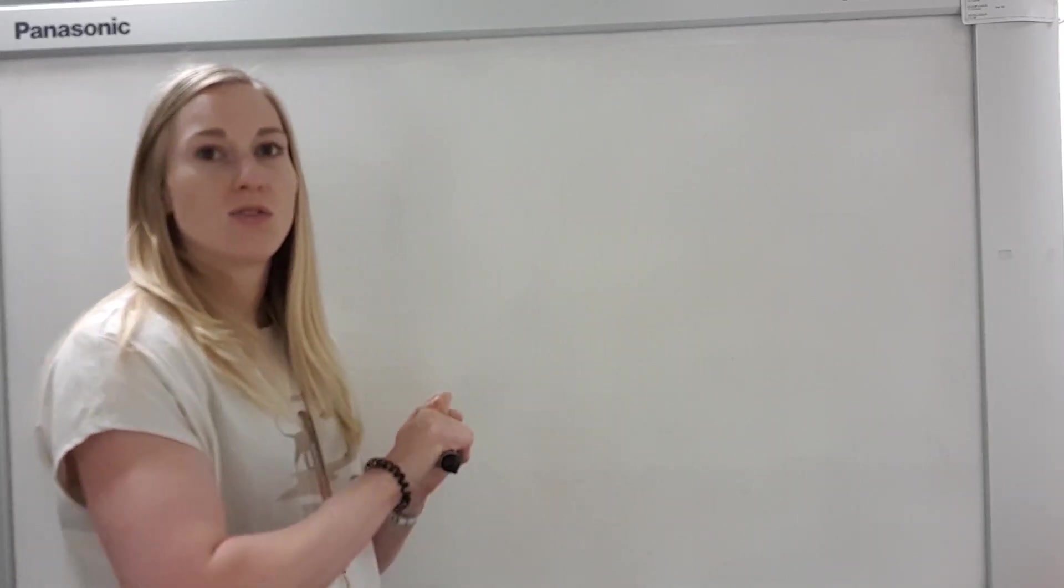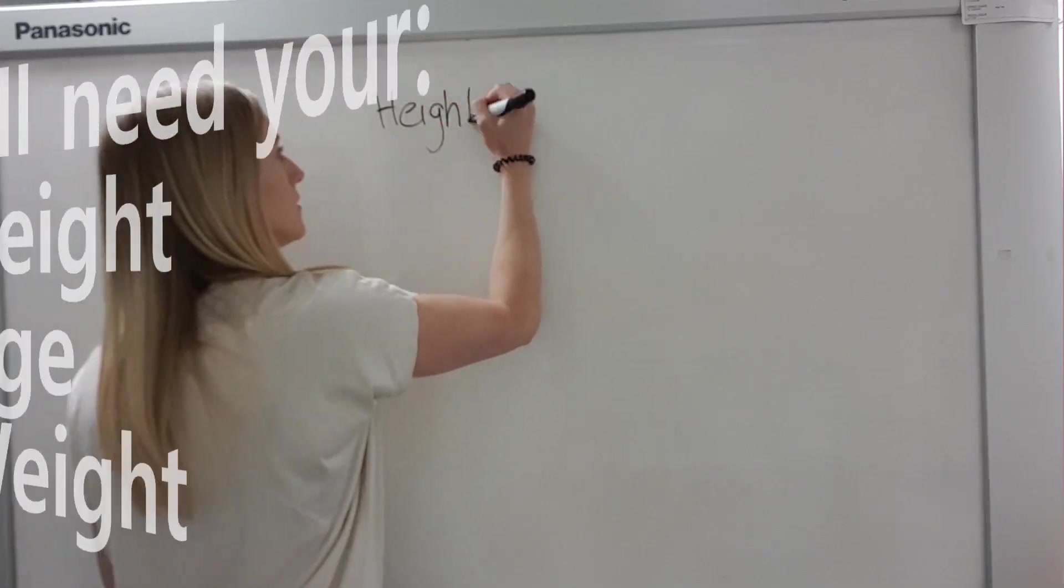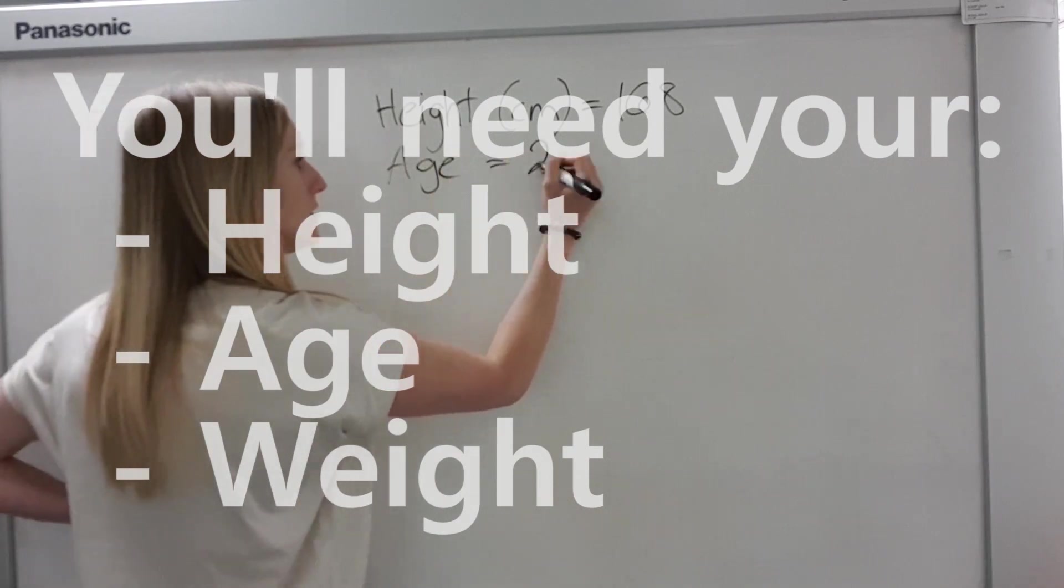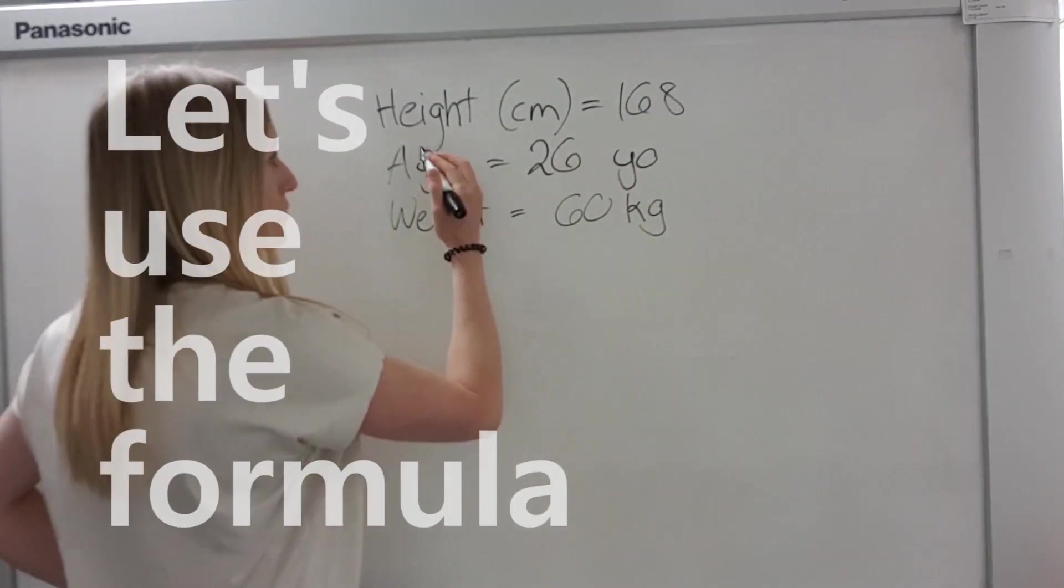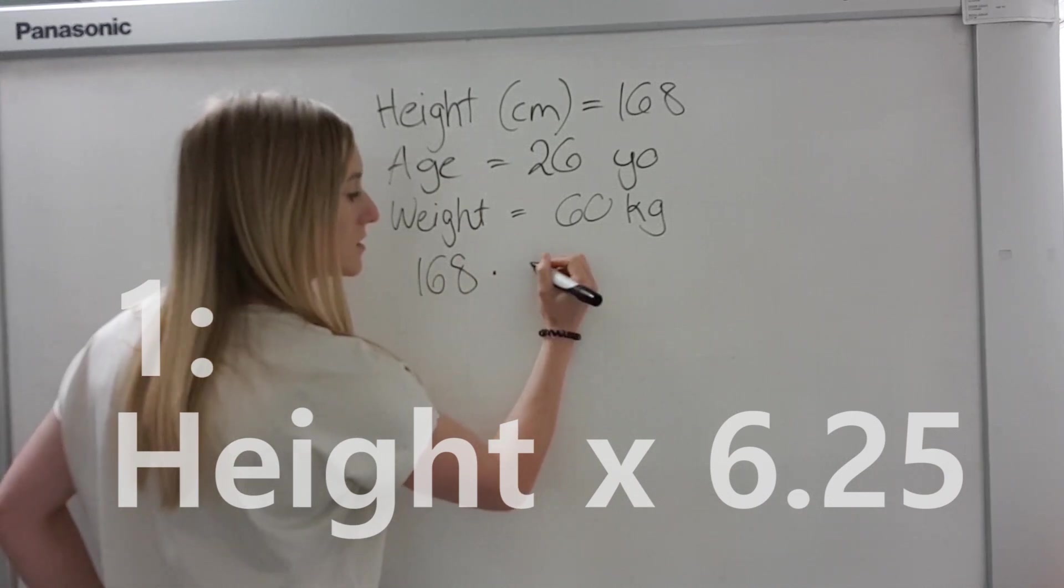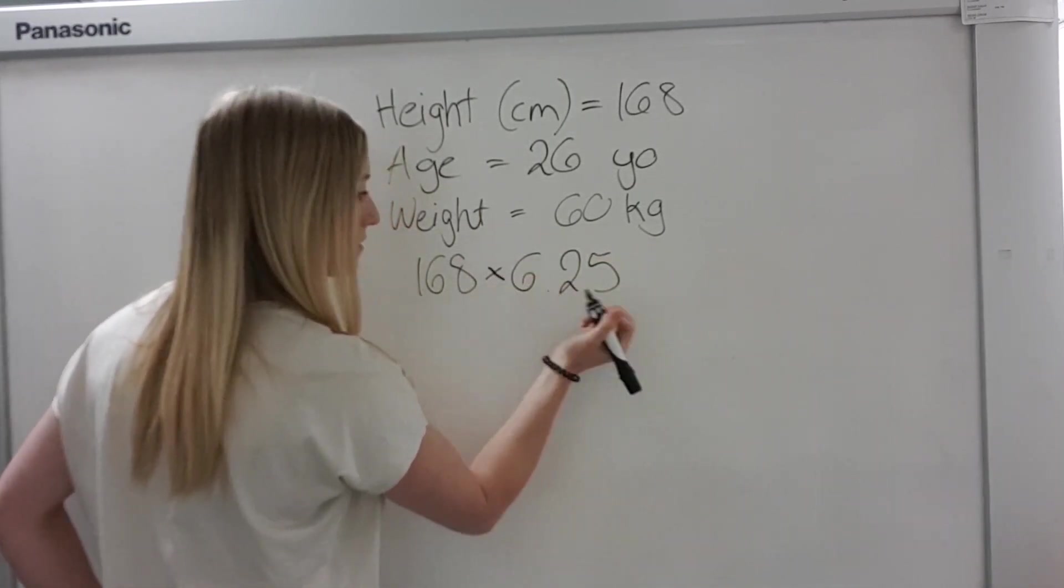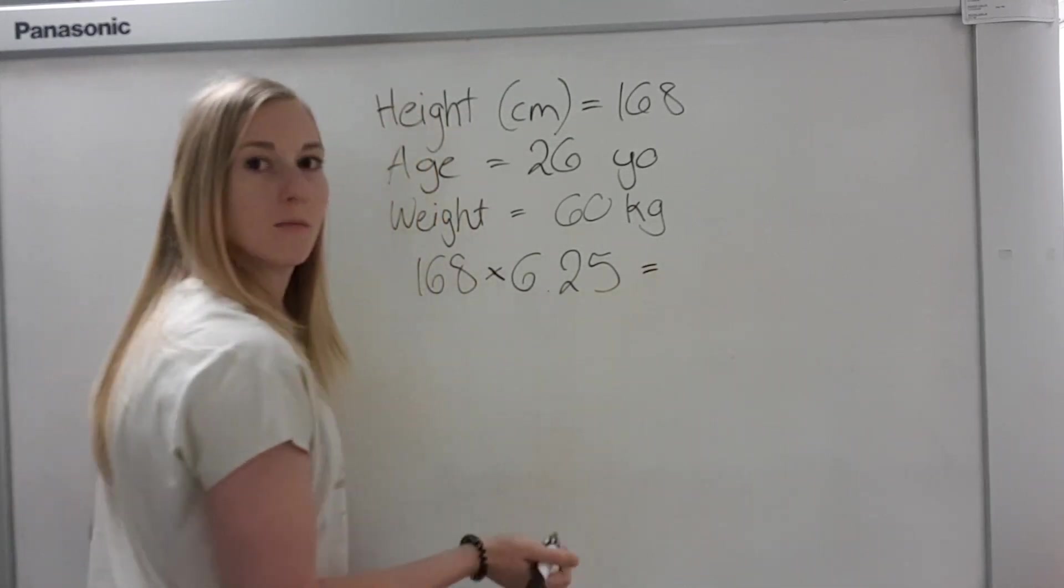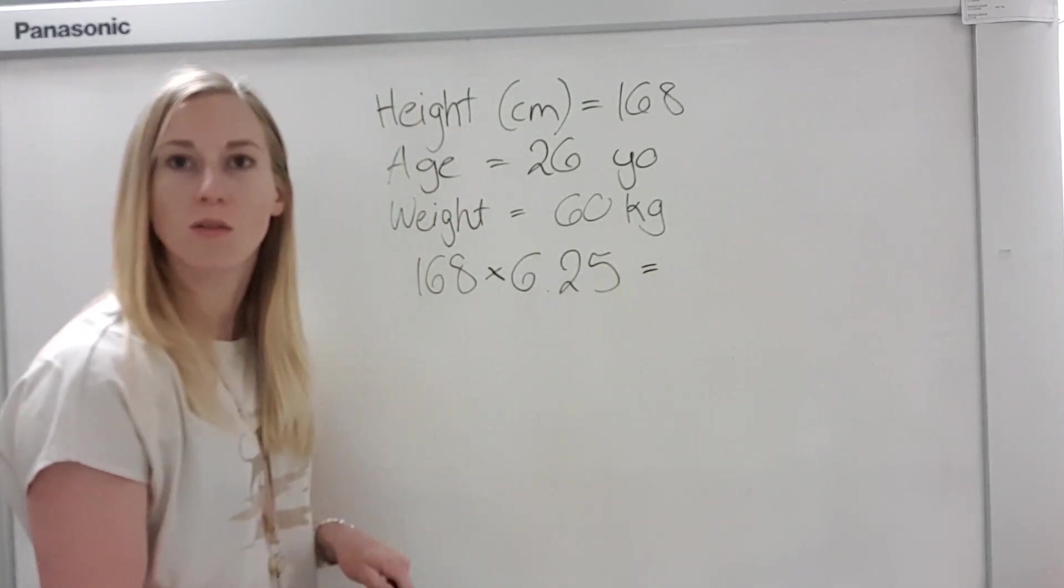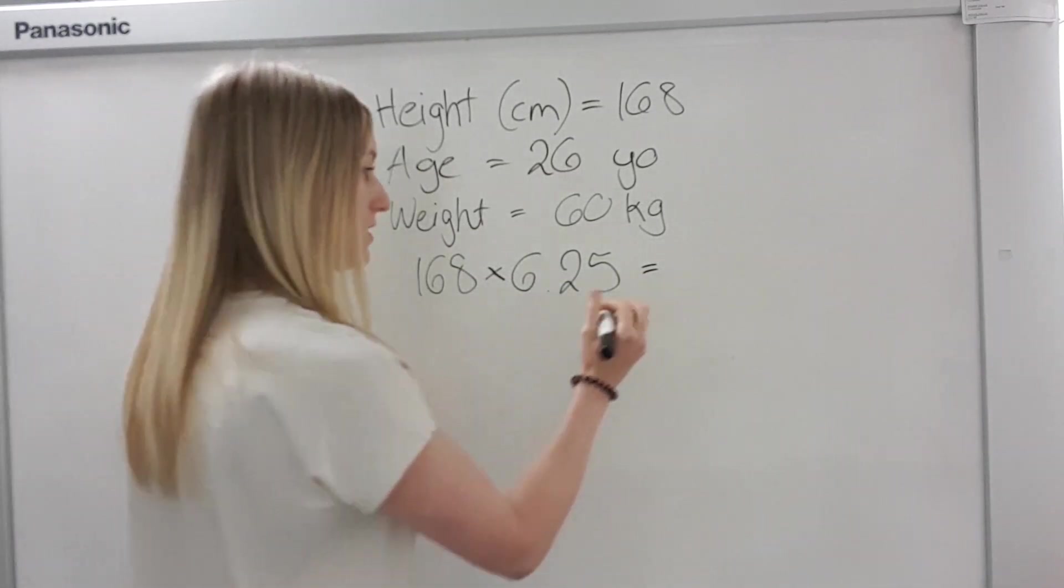Step one is to calculate your BMR, so your basal metabolic rate. I'm just gonna write my own numbers down and then we can use that later on. So my height 168 times 6.25, do this. Okay, so that is, I broke it down before, so I'll just read that out. 168 is 1050.